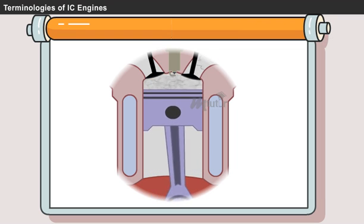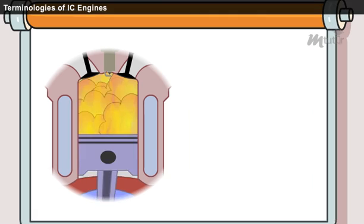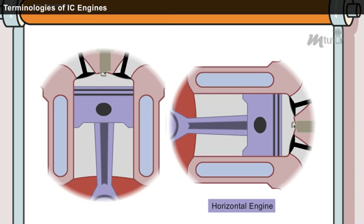The topmost position of the piston towards the cover end side of the cylinder is called top dead center, or TDC. In horizontal engines, this is known as inner dead center.